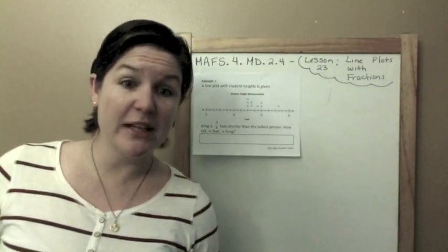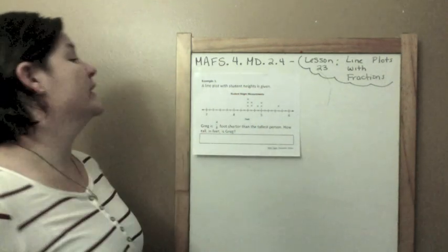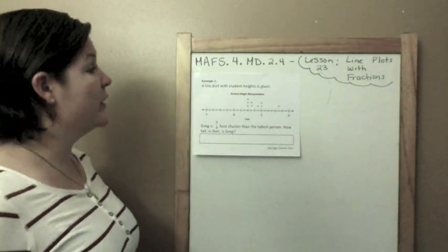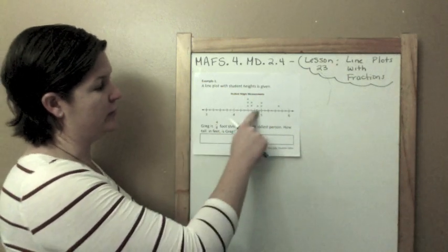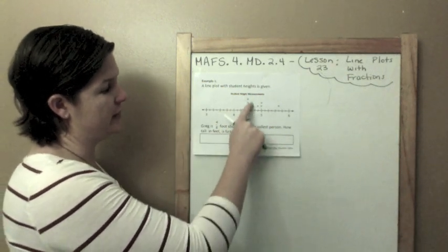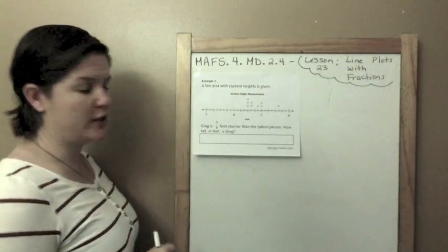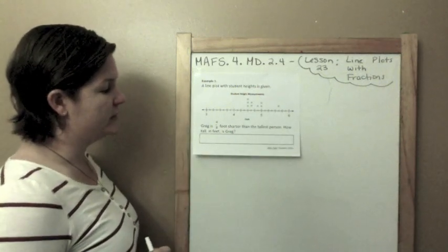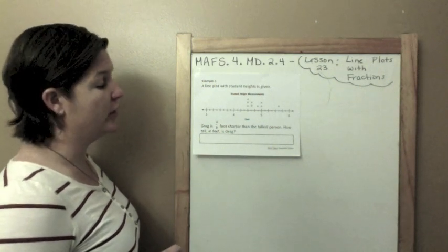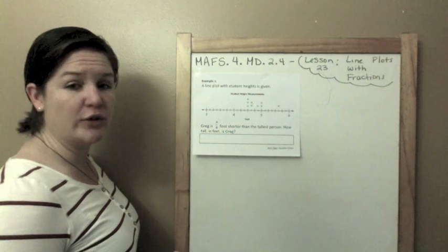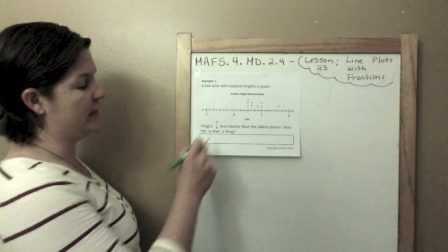Let me teach you example one. A line plot with student heights is given. The question is: Greg is four eighths of a foot shorter than the tallest person. How tall in feet is Greg?